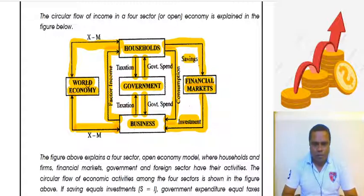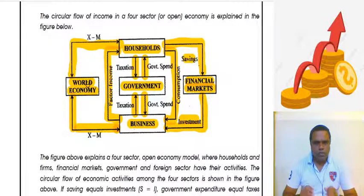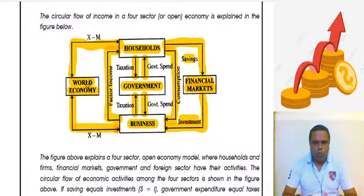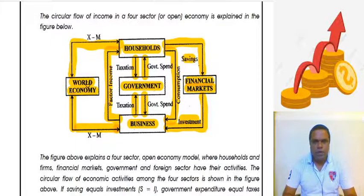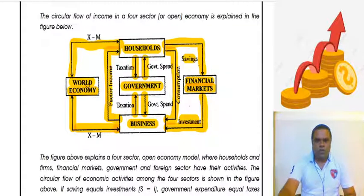In an exam, if you get the question to explain the circular flow of national income in an open economy, don't get confused — open economy basically stands for a four-sector economy. With these four short notes, chapter number two is complete. In the next lecture, we will meet with new concepts. Thank you very much. Stay home, stay safe.